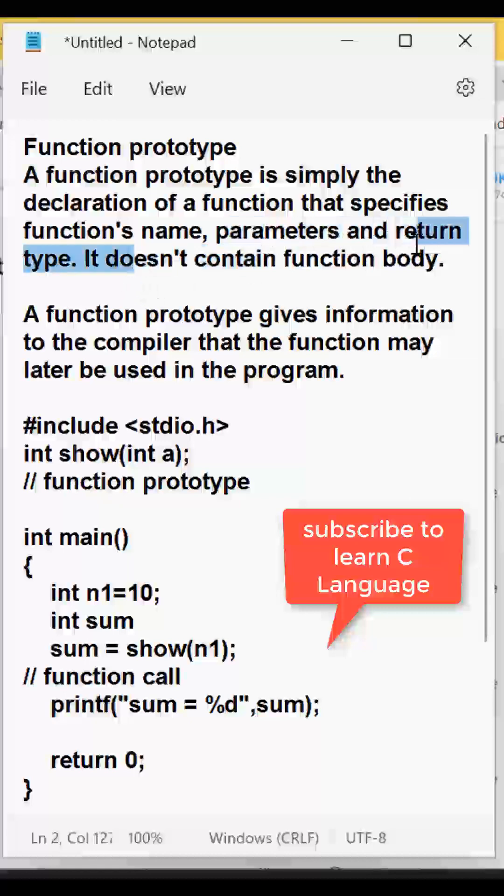So it does not contain the function body, like it just has its function name. Function prototype gives the information to the compiler that the function may later be used in the program.